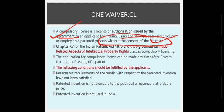Chapter 16 of the Indian Patents Act 1970 and the Agreement on Trade-Related Aspects of Intellectual Property Rights (TRIPS/WTO) discuss compulsory licensing. The application for compulsory licensing can be made anytime after three years from the date of sealing of a patent. So if a company has a patent, after three years, an application can be made for compulsory licensing.